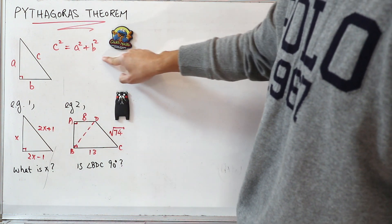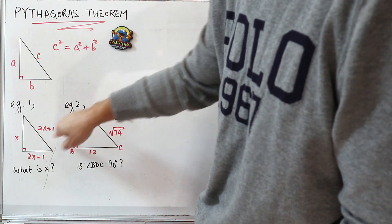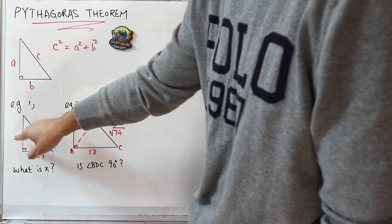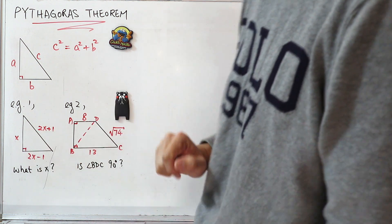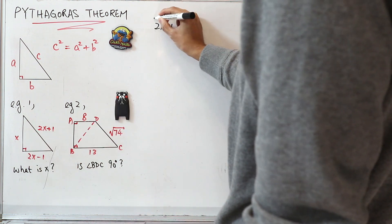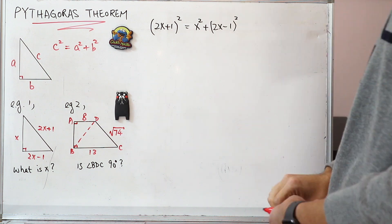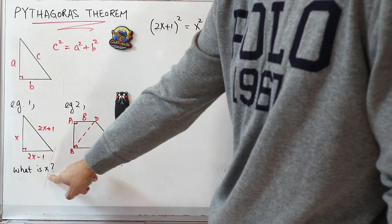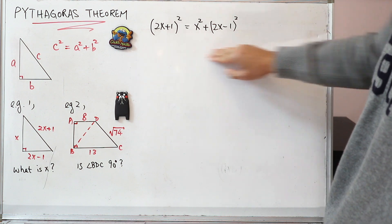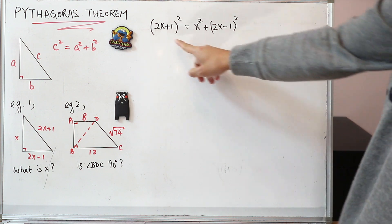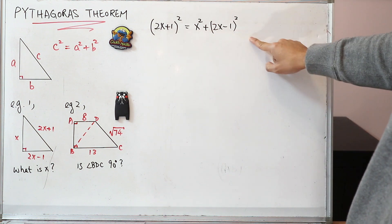So by applying Pythagoras Theorem, I know that (2x plus 1) whole thing squared is equal to x squared plus (2x minus 1) whole thing squared. The question is asking you to find x, so you have to solve for x using this equation. What you have to do is expand this bracket and this bracket.